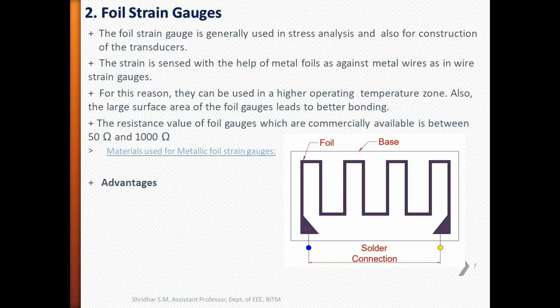Foil strain gauges. These gauges are used generally in stress analysis and also in the construction of transducers. The strain is sensed with the help of metal foil, as against metal wire in a wire strain gauge. The foil gauge has much greater dissipation capacity compared with wire wound gauges because of their greater surface area for the same volume. Due to this reason, they can be employed for higher operating temperature ranges.